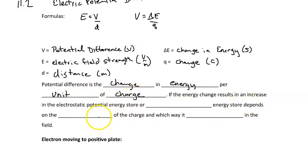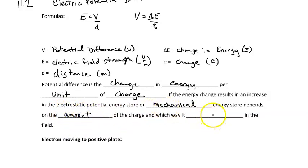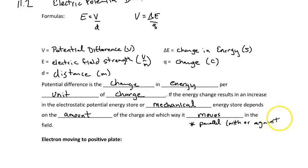Whether the energy results in an electrostatic potential energy store or a mechanical energy store will depend on essentially two things: the amount of charge that's actually being moved, and the way in which it moves in the field — specifically whether it moves parallel to the field, meaning either with or against the field.